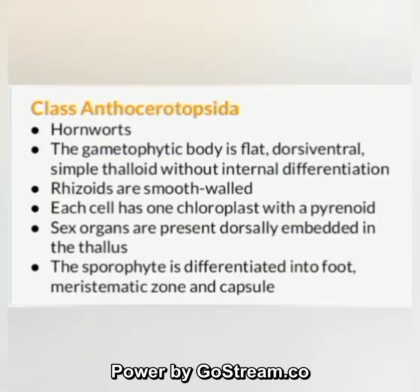Class Anthocerotopsida — hornworts: the gametophytic body is flat, dorsiventral, simple thallose, without internal differentiation. Rhizoids are smooth-walled. Each cell has one chloroplast with a pyrenoid. Sex organs are present dorsally, embedded in the thallus. The sporophyte is differentiated into foot, meristematic zone, and capsule.